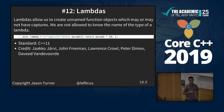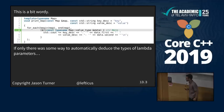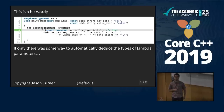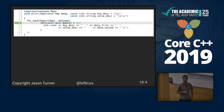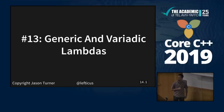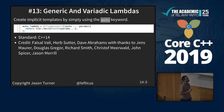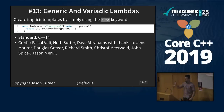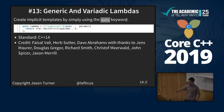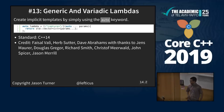This line is a bit wordy. If only there was some way to automatically deduce the types of lambda parameters. Auto — generic lambdas! I like to refer to C++14 as a bug fix to C++11 because of things like this. Generic and variadic lambdas added in C++14. This one has about four standards papers associated with it: Herb Sutter, Dave Abrahams, Faisal Vali, with thanks to Jens Maurer, Douglas Gregor, Richard Smith, Christoph Mirvold, John Spicer, Jason Merrill.